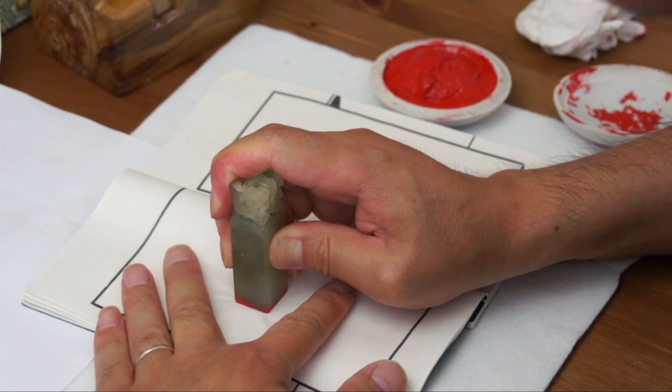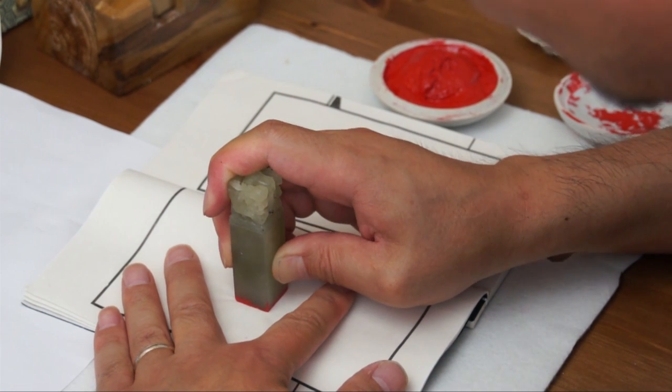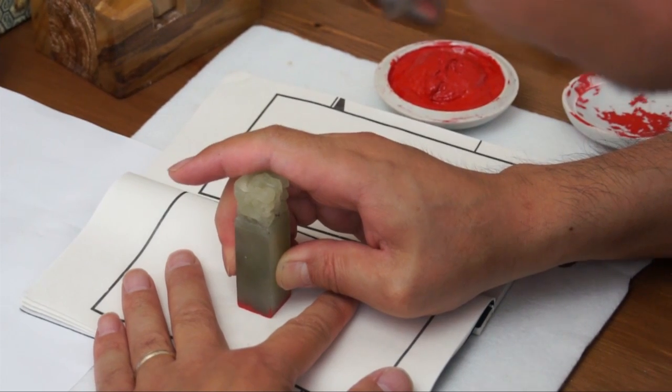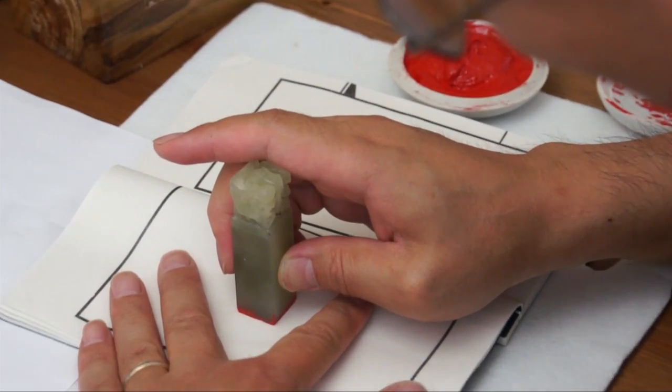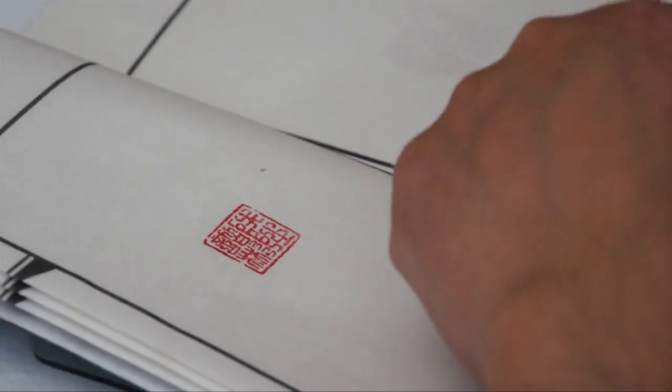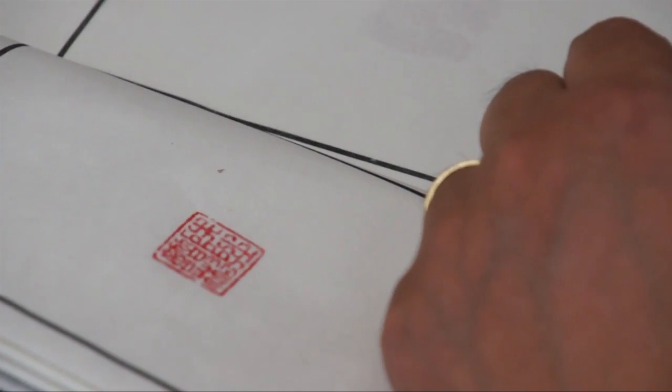Press evenly, you don't have to press that hard for a positive seal if you want a fine line. It's a little bit grainy, but if you press harder, it will be thicker, less grainy.